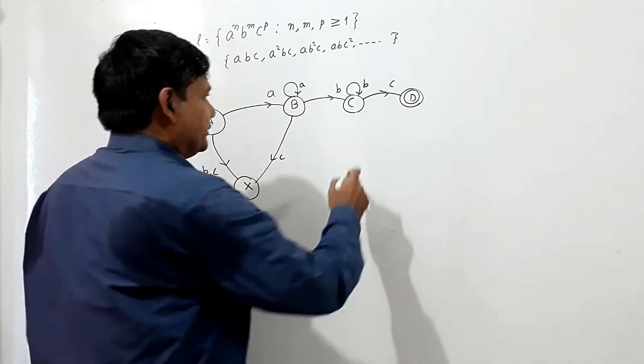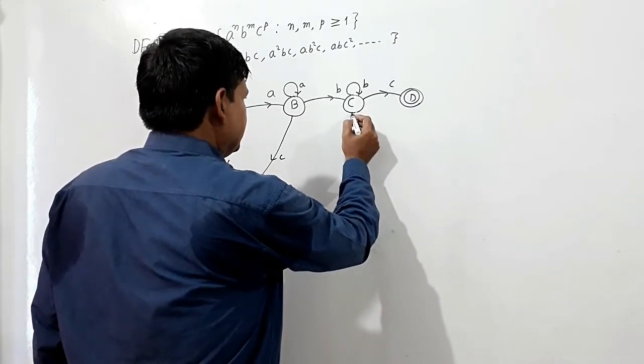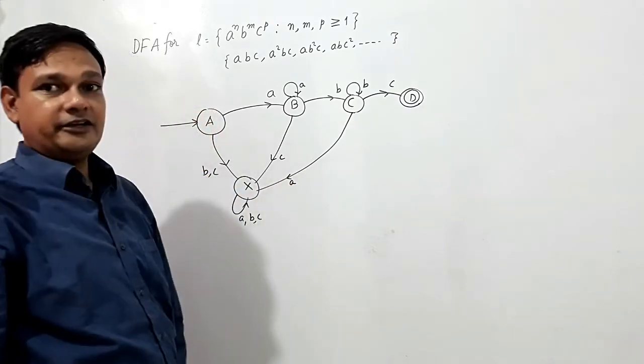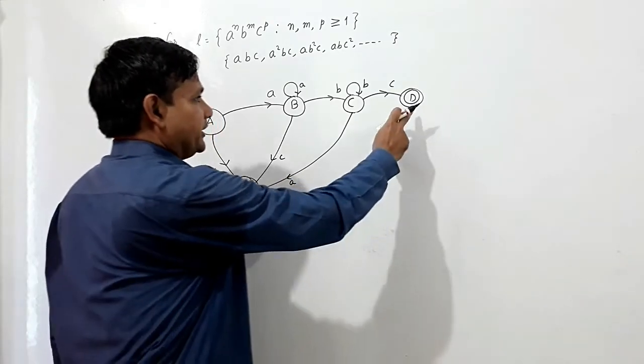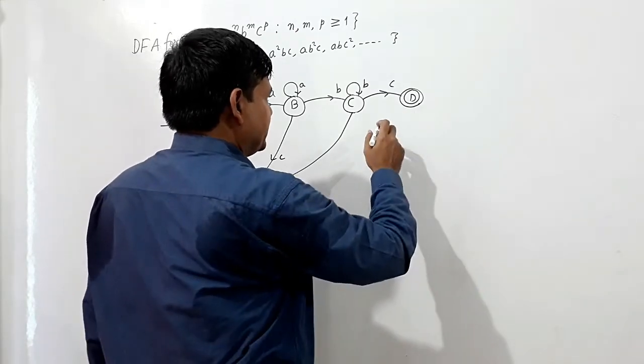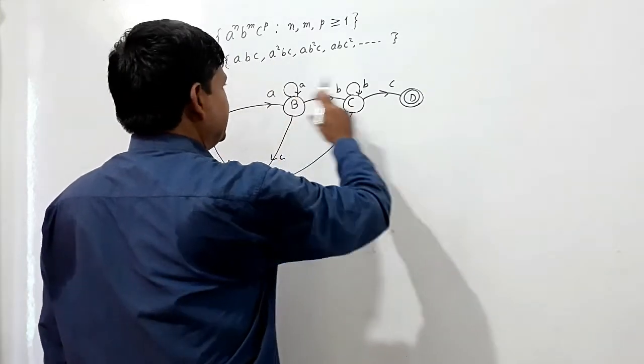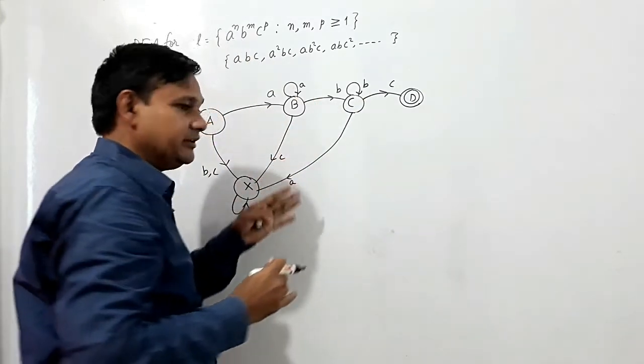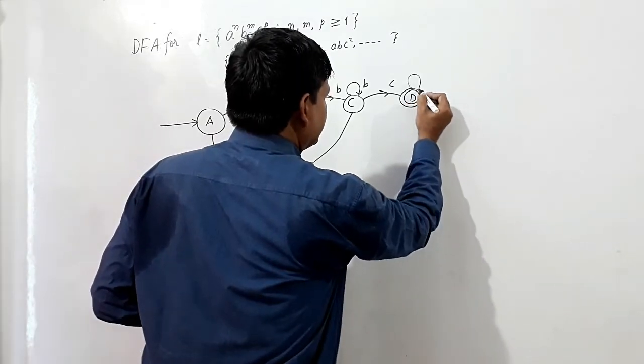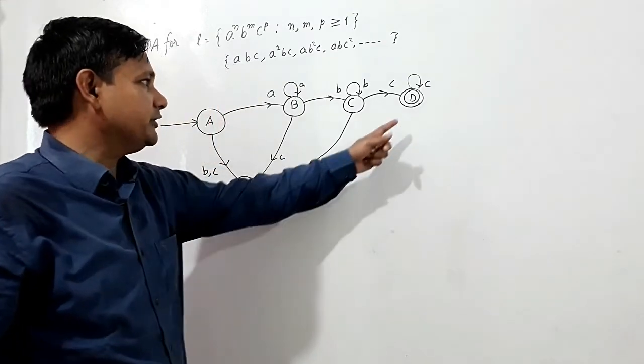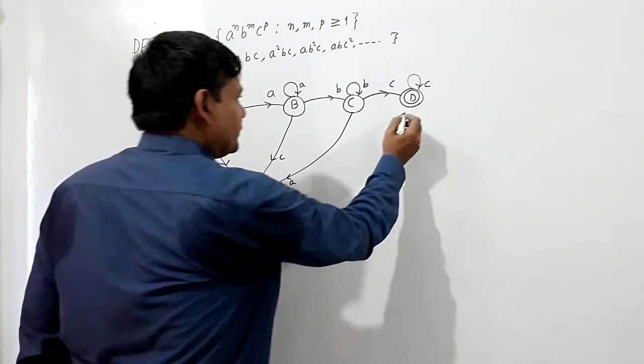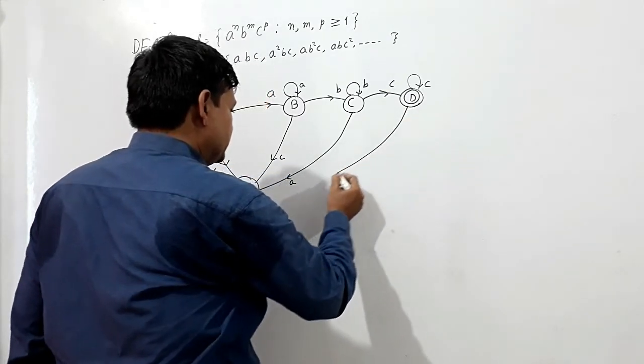But if I get A, it should be reaching the dead state. Here in the final state, if I get any number of times C, if any number of times C comes it will remain in the final state. If in this final state it gets any A or B, it should be in the reject state.